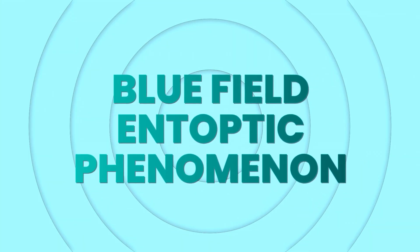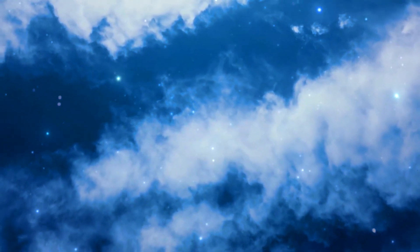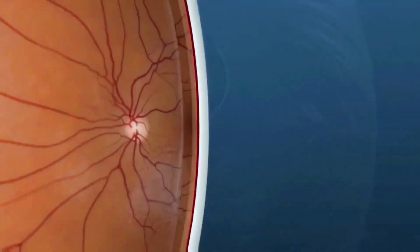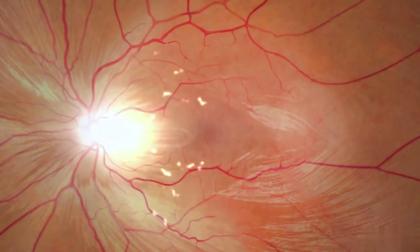Have you ever seen your white blood cells — and no, not through a microscope? If you've ever looked up at a plain blue sky, chances are you might have seen their movement. The blue field entoptic phenomenon, or Scheerer's phenomenon, is exactly that. The retina has a blood supply, and some of these blood vessels are on top of the retina between the world and the retina, meaning light has to pass through them. White blood cells in the blood vessels scatter the light, causing the appearance of bright dots or streaks that move around in a linear fashion because they're passing through the pathway of the blood vessels.